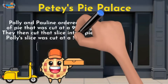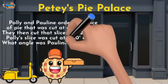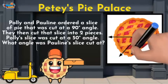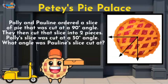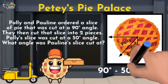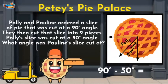Polly's slice was cut at a 50-degree angle. What angle was Pauline's slice cut at? I need to find the answer so I know how much to charge Pauline. Here's a little diagram to help — it shows the 90-degree angle, then on the inside, the angle of the slice for Polly and for Pauline. I can take the total angle they bought, 90 degrees, and subtract Polly's amount, 50 degrees, to find the angle of Pauline's cut. 90 degrees minus 50 degrees equals 40 degrees. Pauline's slice was 40 degrees, and she needs to pay two dollars for her little slice of paradise.